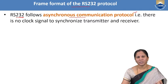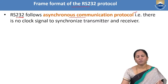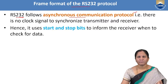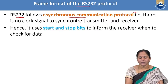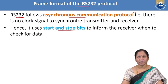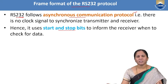Since there is no clock signal, to synchronize the data between transmitter and receiver, start bits and stop bits must be included along with the original data. Stop bits and start bits are used so that the receiver knows what the original data is and whether it has been transmitted. Using start bits and stop bits, synchronization between transmitter and receiver is achieved.